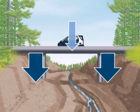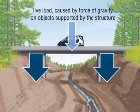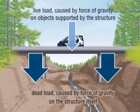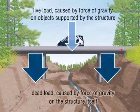Let's actually see it in action. Looking at the baby blue arrow — what type of load is that? It's a live load because it's caused by the force of gravity pulling down on the car that's being supported by the bridge. What about the navy blue? Those are dead loads because they're caused by the force of gravity pulling down on the bridge. The top deck of the bridge is being pulled on by gravity and is being supported by the two columns.